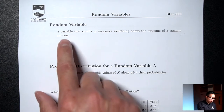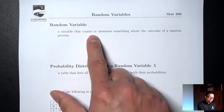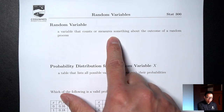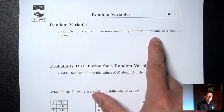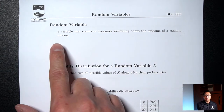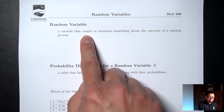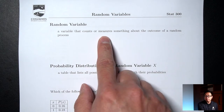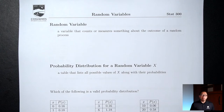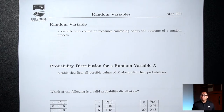A random variable is a variable that counts or measures something about the outcome of a random process. What we're doing is forcing numbers to happen by counting or measuring something. For statistics, the main example we're going to be talking about is picking random people.